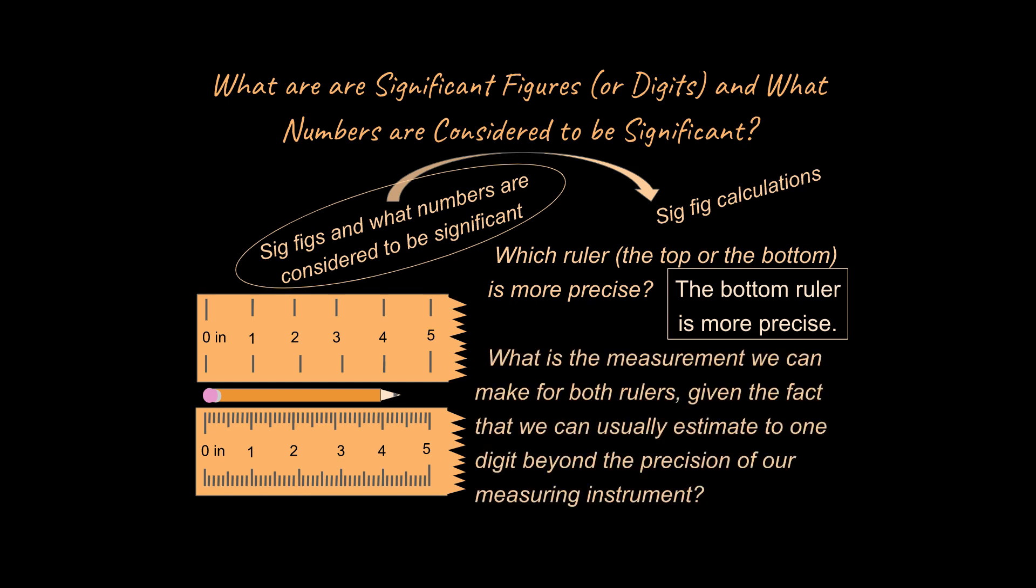Next I want to ask you what is the measurement that you think we would come up with using the top ruler and the bottom ruler. And in most classrooms and with most instructors and most books you're going to be able to estimate one digit beyond the precision of the measuring instrument. So if that's the case, what could we estimate? This down to the tenths might be and this down to the hundredths might be.